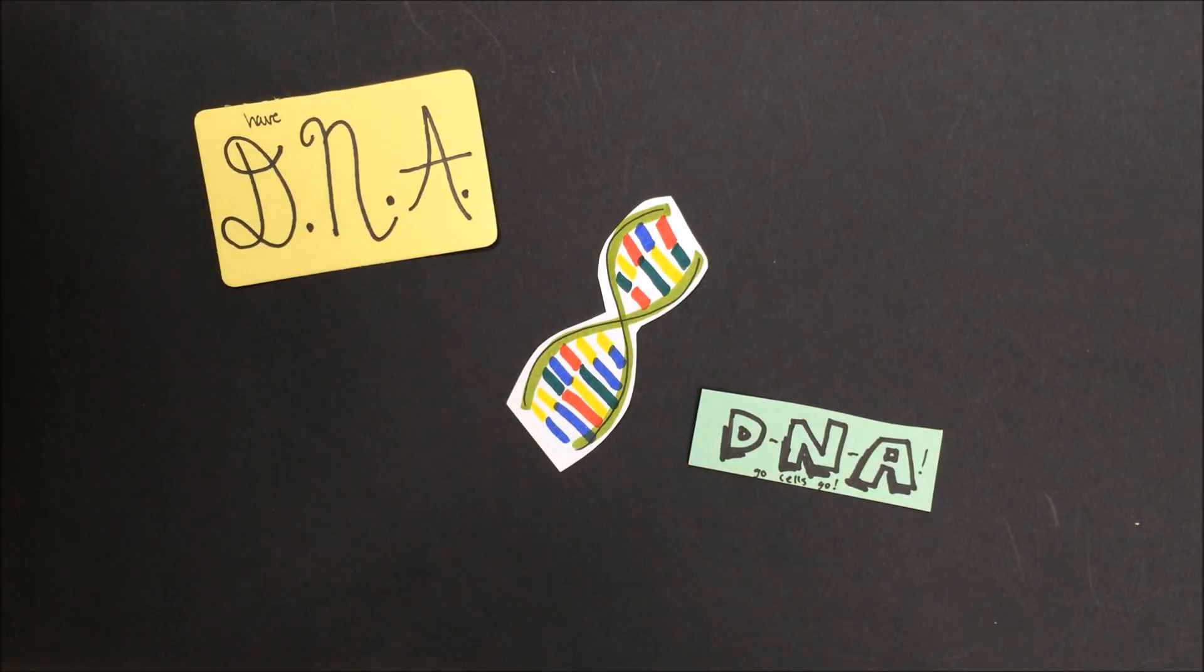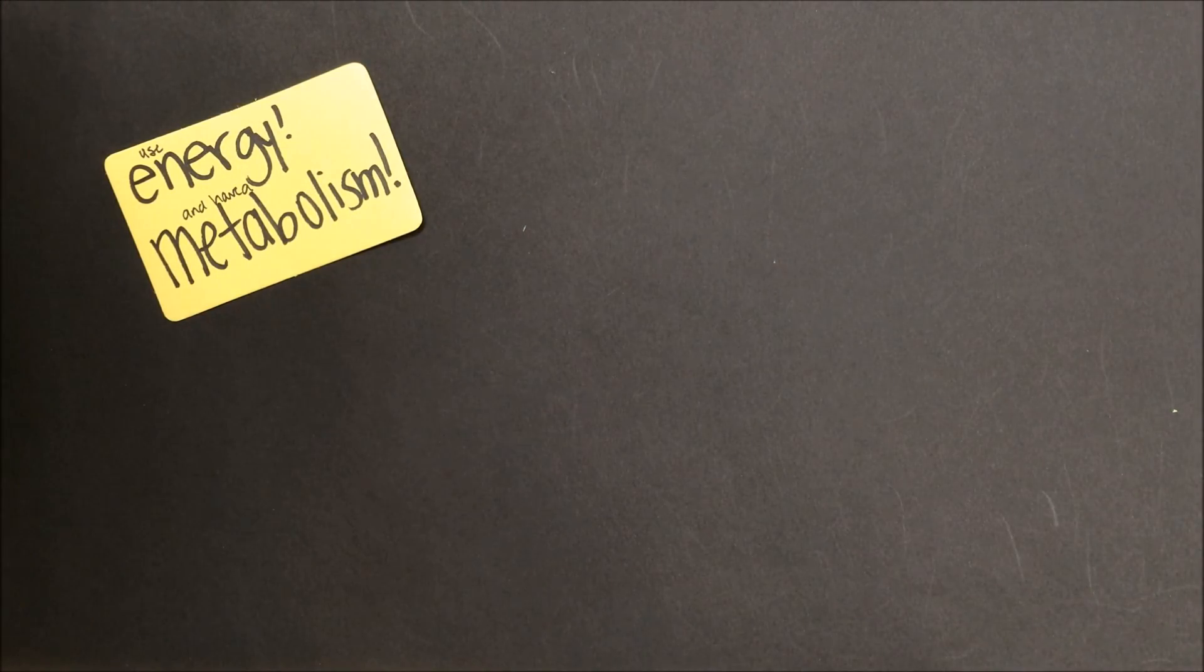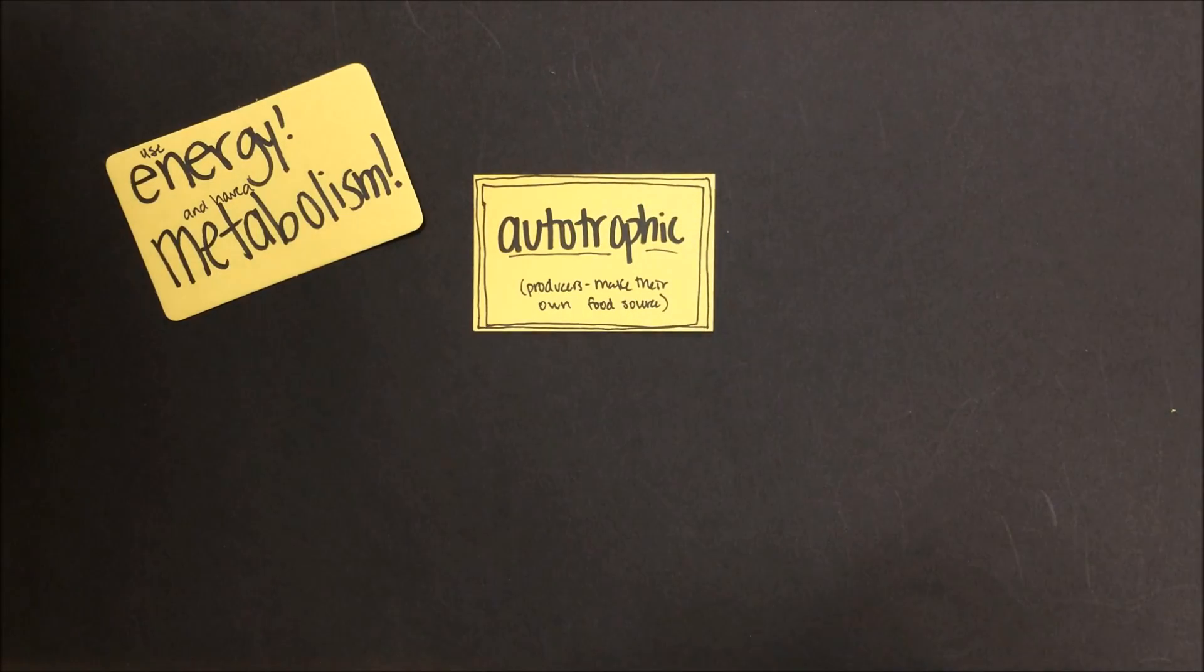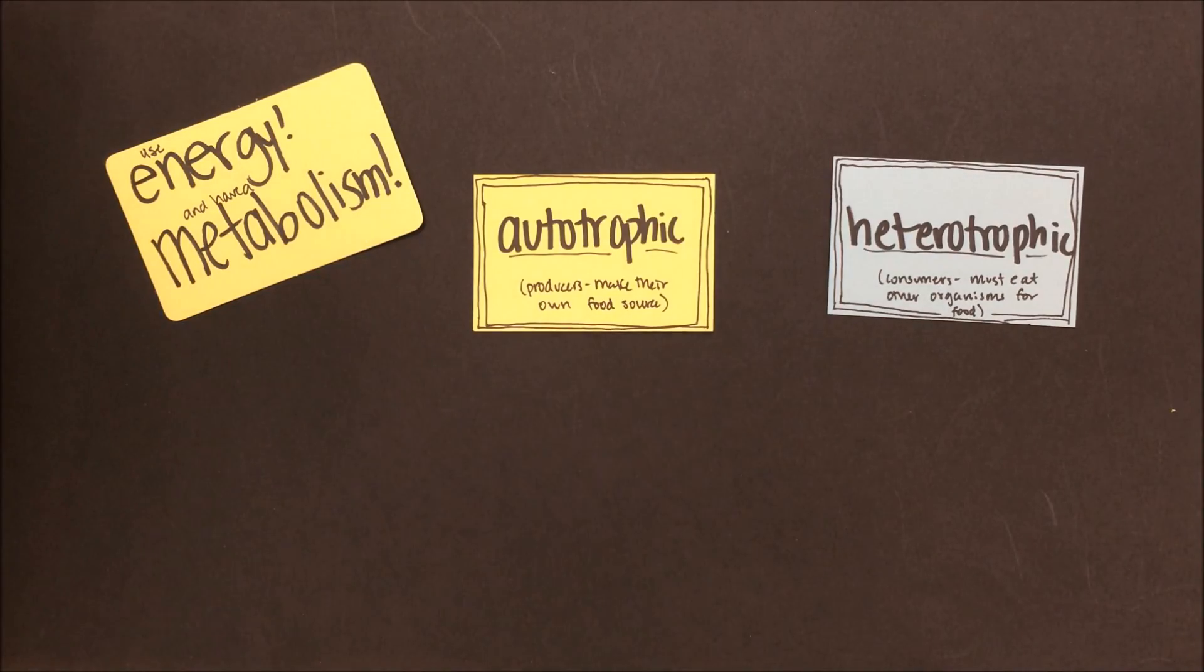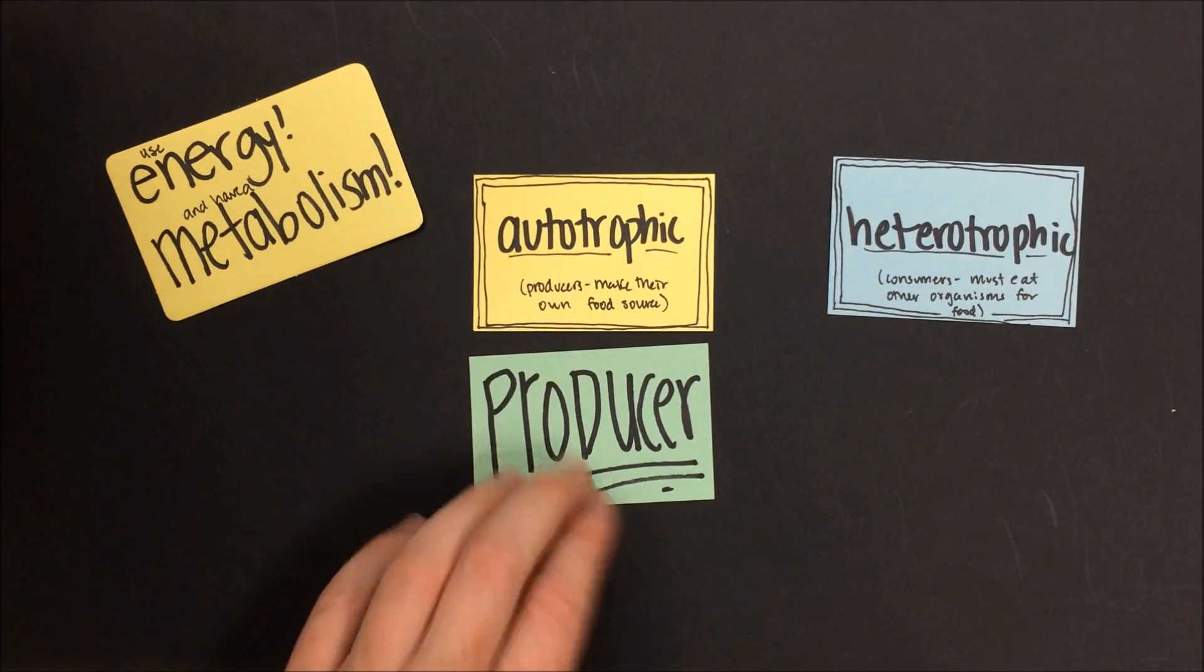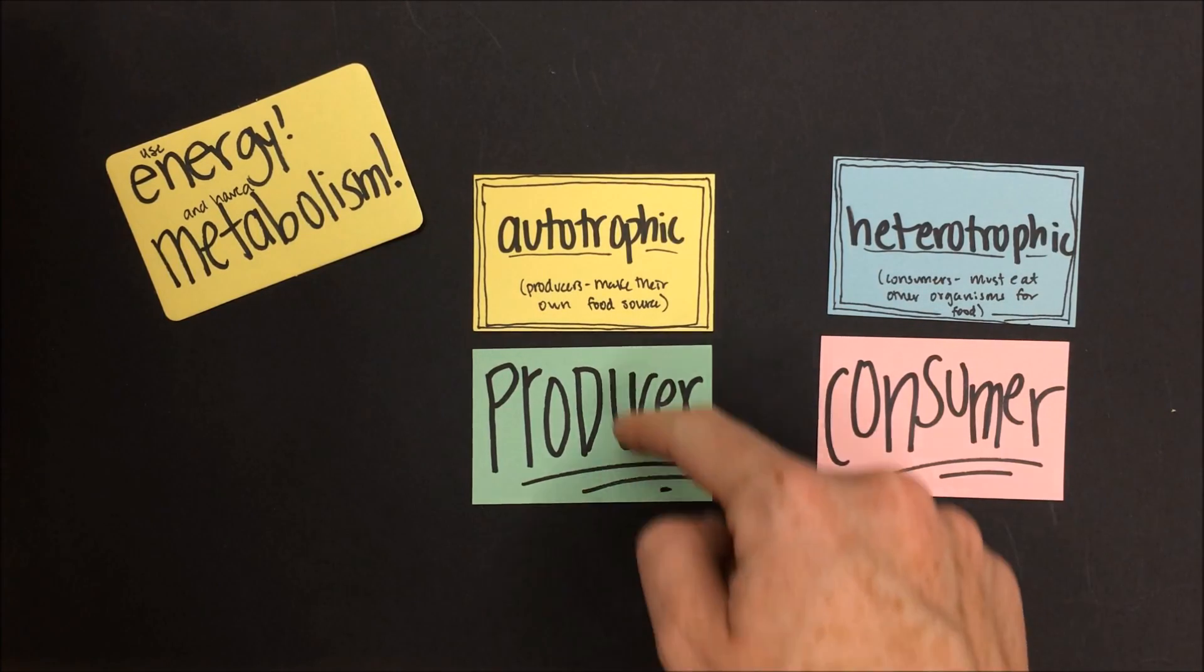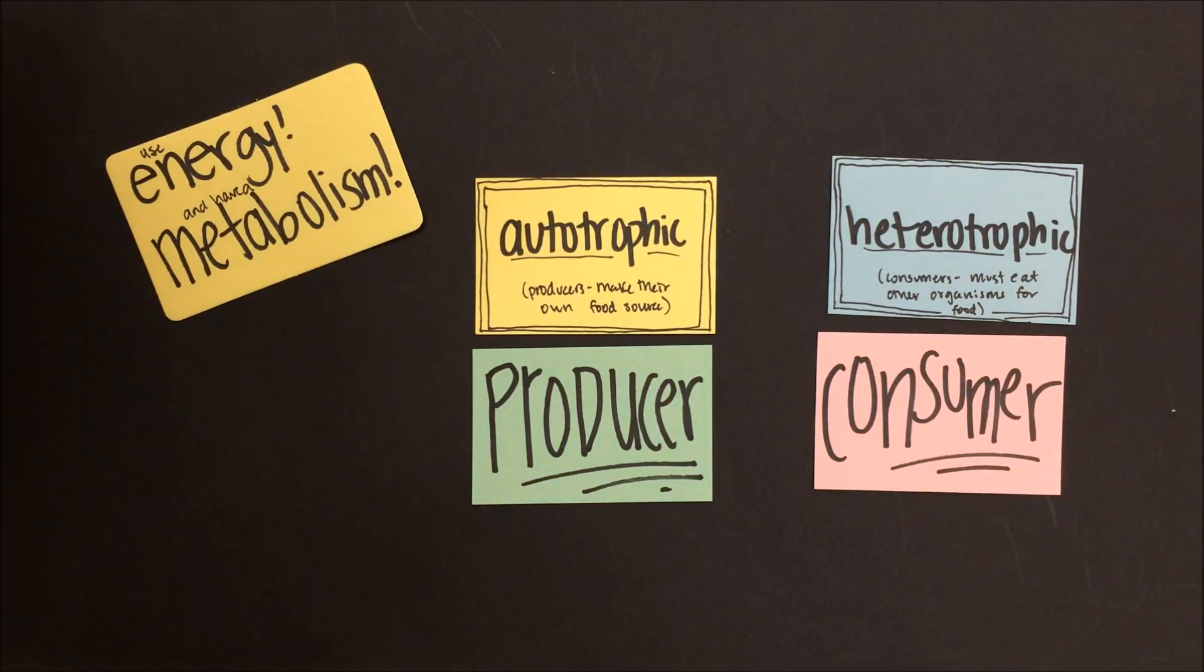All living things have an energy metabolism, which means that they use food or another energy source to power their life processes. Organisms get energy and use energy to power their life processes in many different ways. There are two main ways that organisms can get their energy: they can be autotrophs and make their own food, or they can be heterotrophs and need to eat other organisms to survive. Another word for autotrophs or autotrophic is producer, and another word for heterotrophs or heterotrophic is consumer. Producers can produce or make their own food by themselves. Consumers have to eat other organisms to survive.